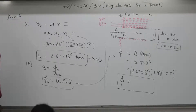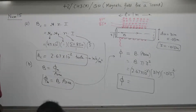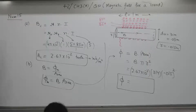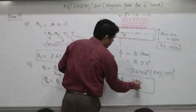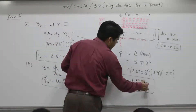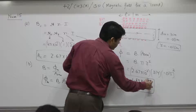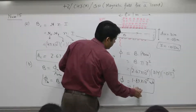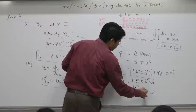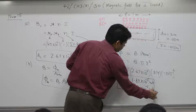The magnetic flux Φ is equal to 1.89 × 10⁻⁵ weber. Approximately 1.9 × 10⁻⁵ weber.